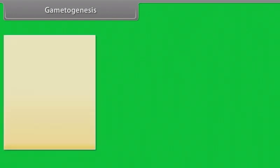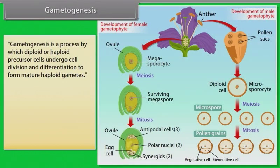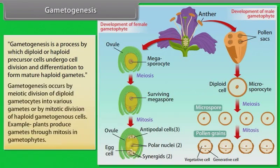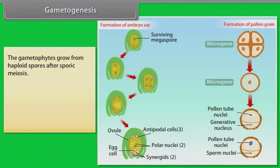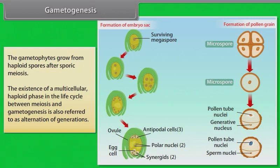Gametogenesis is a process by which diploid or haploid precursor cells undergo cell division and differentiation to form mature haploid gametes. Gametogenesis occurs by meiotic division of diploid gametocytes into various gametes, or by mitotic division of haploid gametogenous cells. Plants produce gametes through mitosis in gametophytes. The gametophytes grow from haploid spores after sporic meiosis. The existence of a multicellular haploid phase in the life cycle between meiosis and gametogenesis is also referred to as alternation of generations.